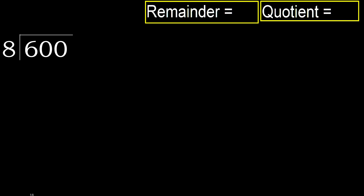600 divided by 8. 6 is less than 8, therefore move to the next digit. 60 is not less than 8, therefore we work with 60.